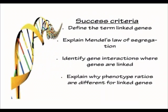As you can see on your screen, we've got some success criteria there for you — a bit of a new thing for the podcast. There are four criteria for us to look at today. By the end of this podcast, I'm hoping you can define the term 'linked genes', explain Mendel's law of segregation, identify gene interactions where genes are linked, and explain why phenotype ratios are different because genes are linked.